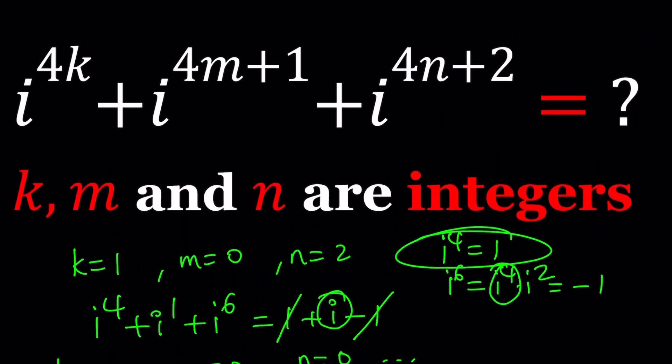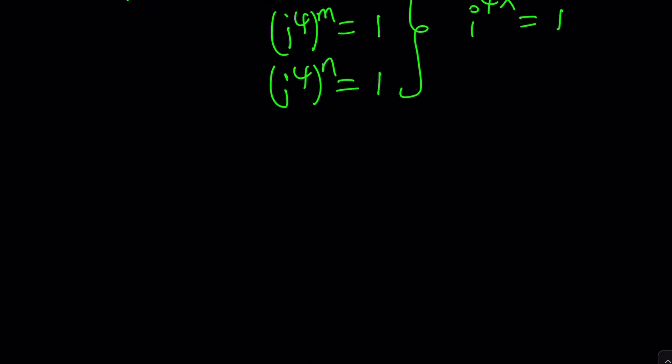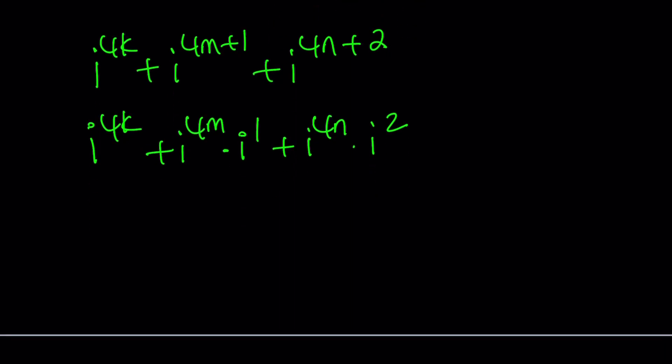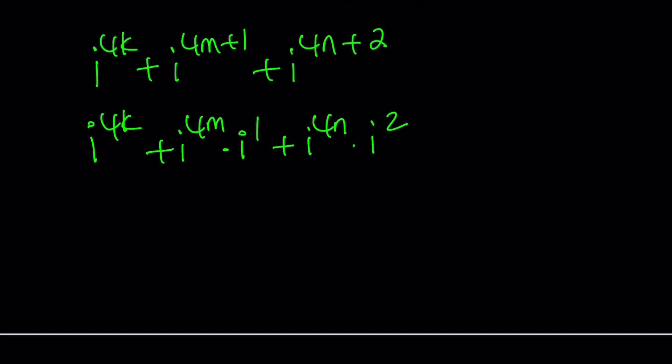Well, we could break it down. So let's rewrite this. We have i to the 4k plus i to the 4m plus 1 plus i to the 4n plus 2. Now, we could write this as i to the power 4m times i to the power 1, and the third one as i to the 4n times i to the 2nd. Now, notice that i to the 4k, i to the 4m, and i to the 4n are all 1.